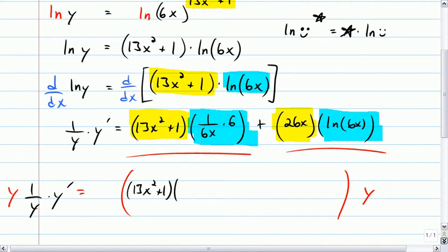That's 13x squared plus 1. 1 over 6x times 6. That's just 1 over x. Plus 26x times the natural log of 6x.